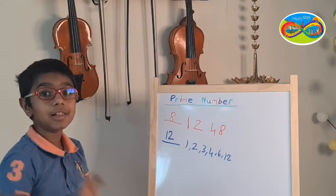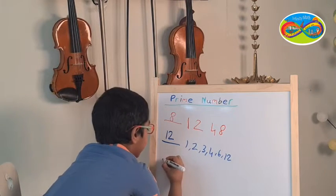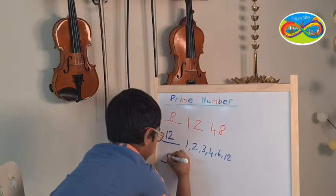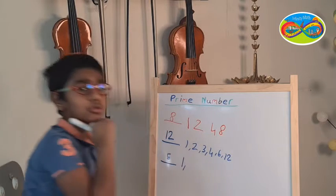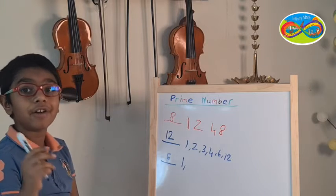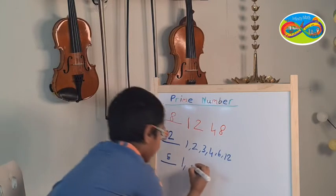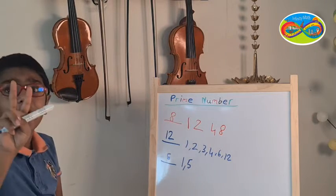Now let's take the example 5. So let's see the factors for 5. So 1, yes. 2, no. 3, no. 4, no. 5, yes. But wait, I see 5 only has 2 factors.